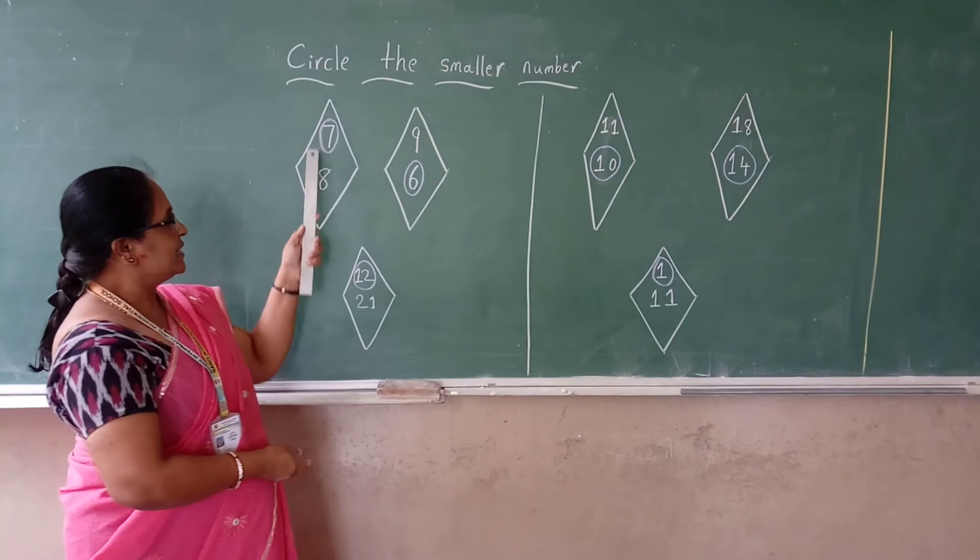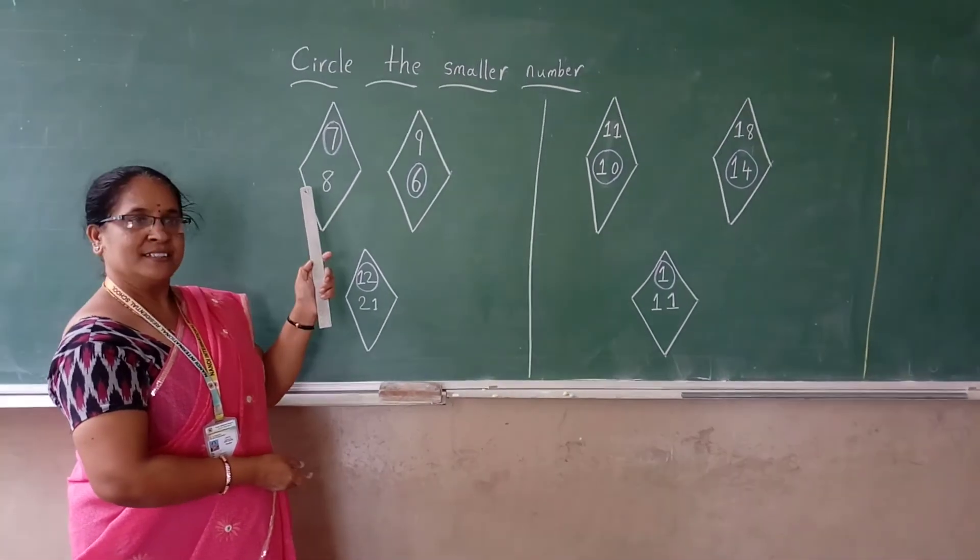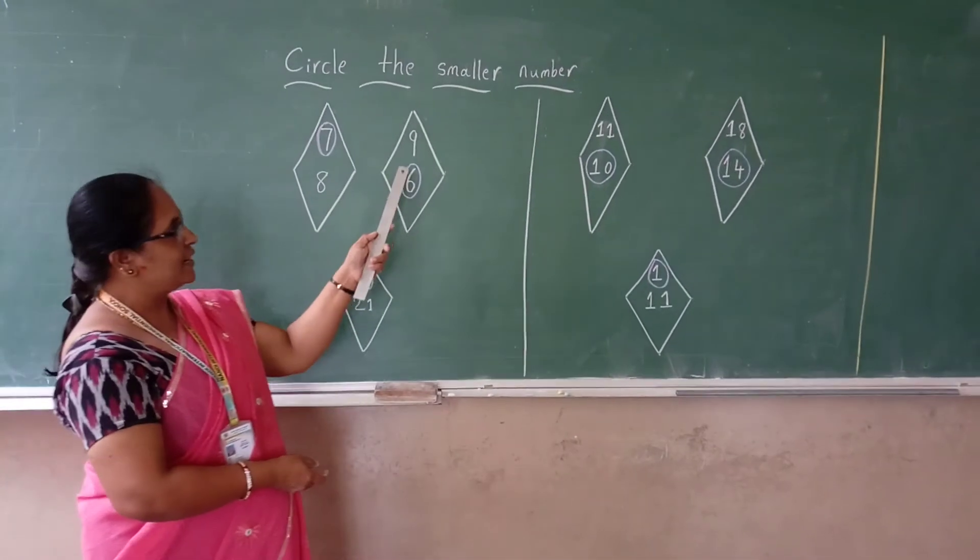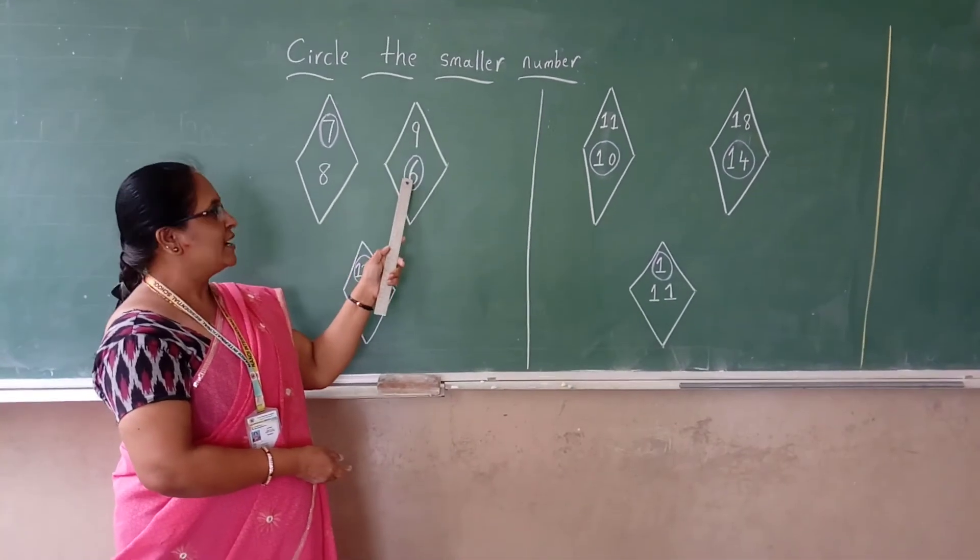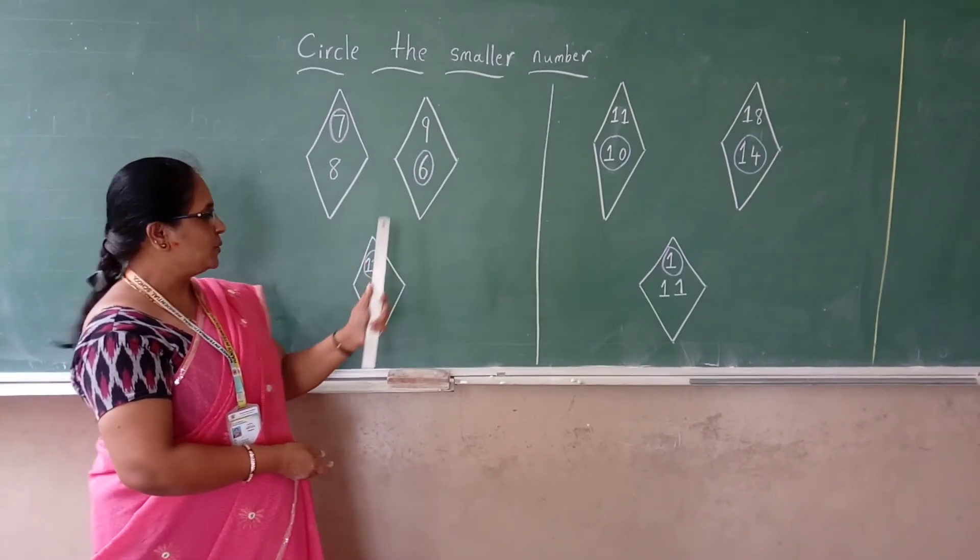See here, 7 and 8 is given. 8 is coming after 7. That's the reason that 7 is the smaller number. Then, 9 and 6 is there. After 6, 9 is coming. That, of course, 6 is the smaller number.